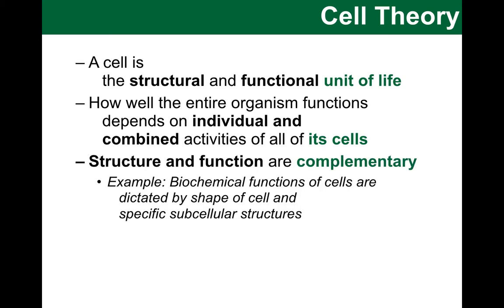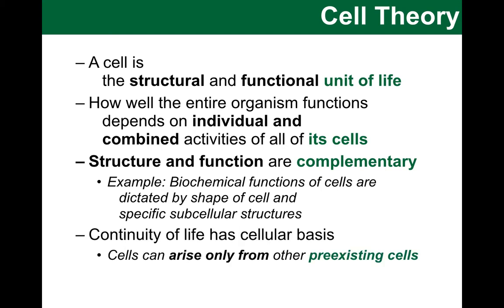The third point is very fundamental to all anatomy and physiology, and we will talk about that on a larger scale later in this course. For now, we will look at it at the cell level. This statement points out that structure and function are linked and complement each other. One example is how the shape and structure of a cell component dictates what biochemical functions can happen. Finally, cells can only arise from other already existing cells. We will look at all of these statements in more detail as we work through the material.